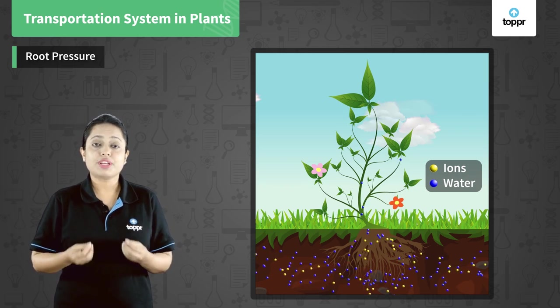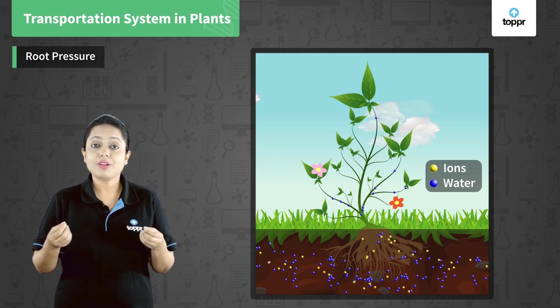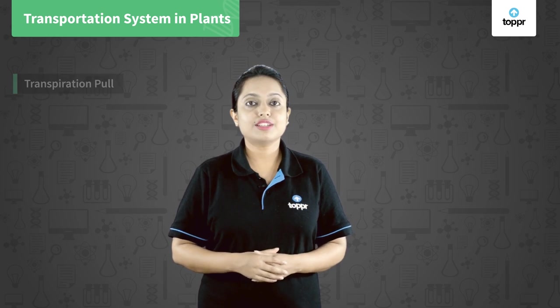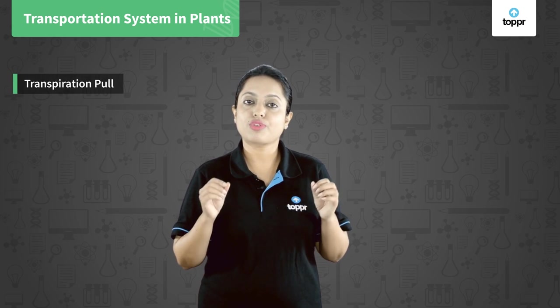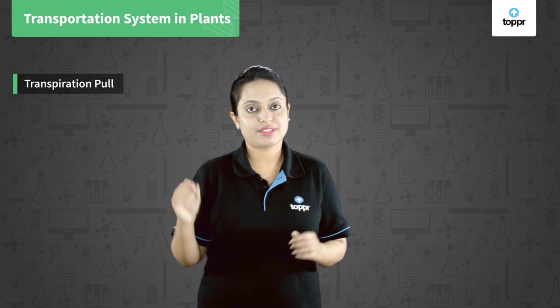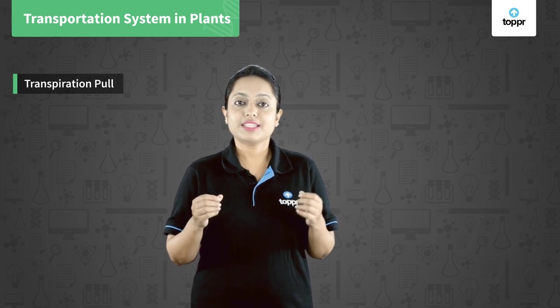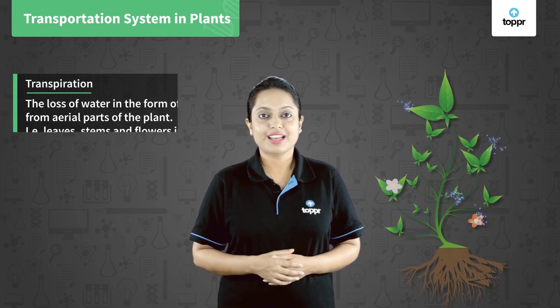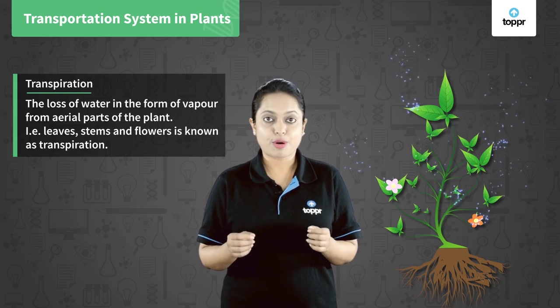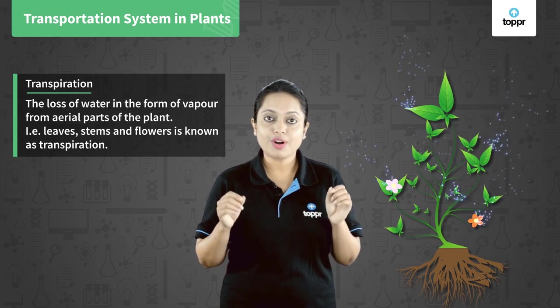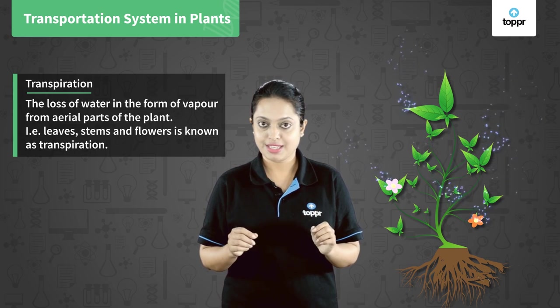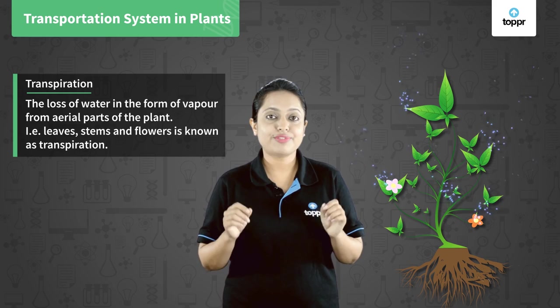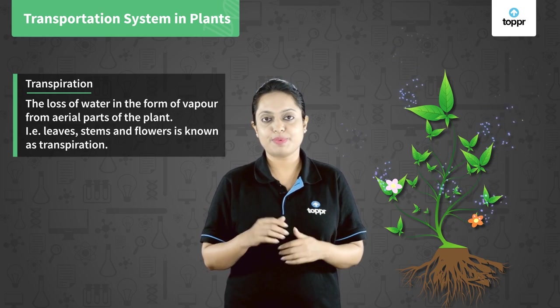This difference in water and ion concentration is carried throughout the water column, transporting water from the roots to the leaves. But root pressure is not enough to carry water in tall plants. So in such plants, a different mechanism — transpiration pull — is used. To understand transpiration pull, let's first understand what transpiration is. The loss of water in the form of water vapor from all the aerial parts of the plant — leaves, stem, and flowers — is known as transpiration.